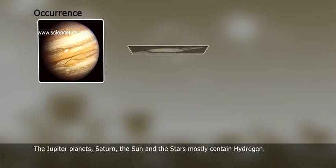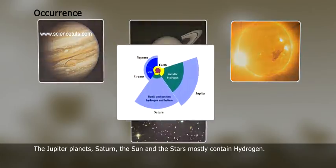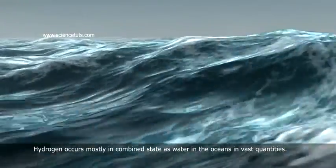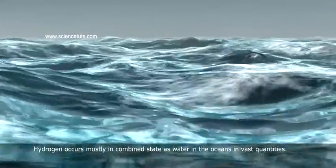The Jovian planets, Saturn, the Sun, and the stars mostly contain hydrogen. Hydrogen occurs mostly in combined state as water in the oceans in vast quantities.